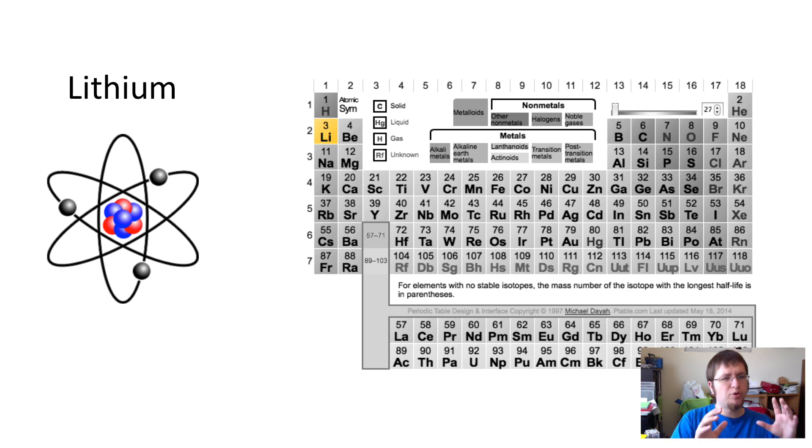Now, when we are drawing the electron shell diagram, we want to keep things as simple as possible. So we're actually going to remove the nucleus there and replace it with the atomic symbol, Li, because that tells us everything we already need to know.